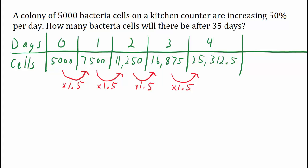Let's use our multiplier to help us start a table of values. We could continue this process until we get to 35 days, but let's use this example to come up with a more efficient way.